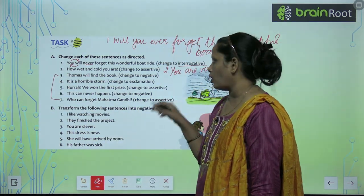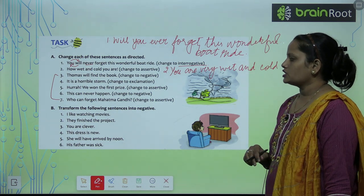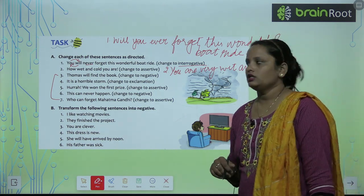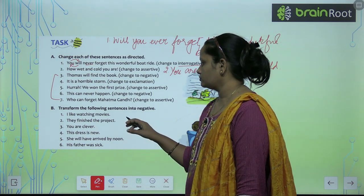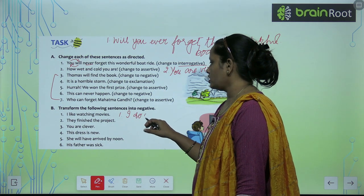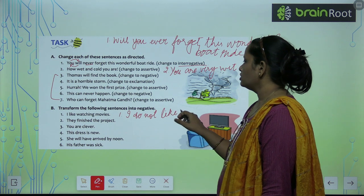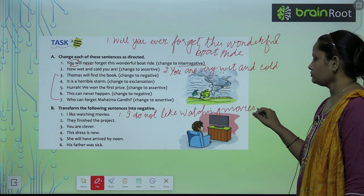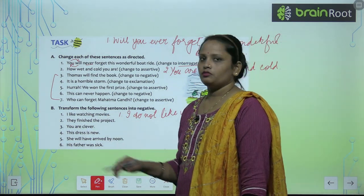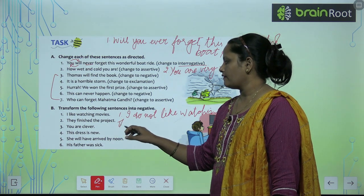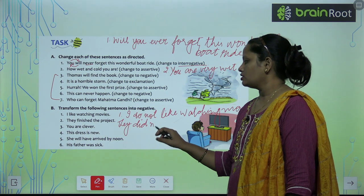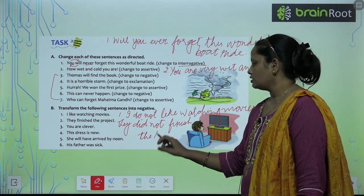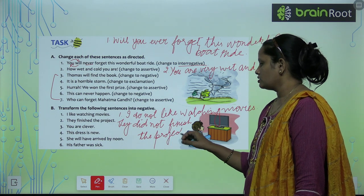Next is Exercise B — transform the following sentences into negative. In sentences ko negative form mein karna hai. 'I like watching movies' becomes 'I do not like watching movies.' 'They finished the project' becomes 'They did not finish the project.' Clear children? So like this, complete the rest of the questions yourself.